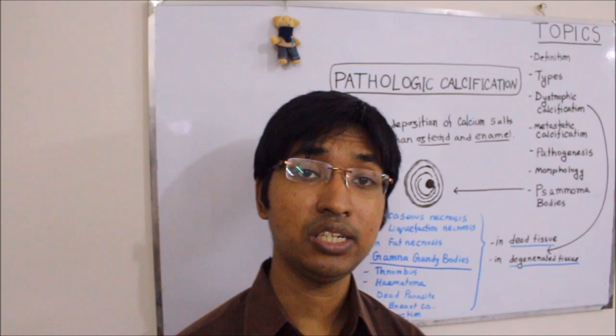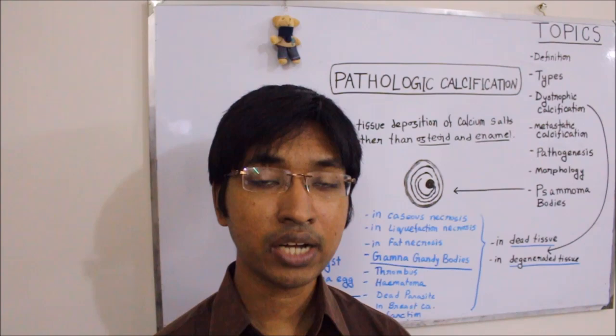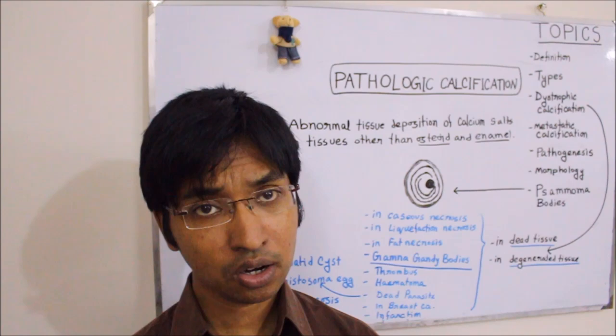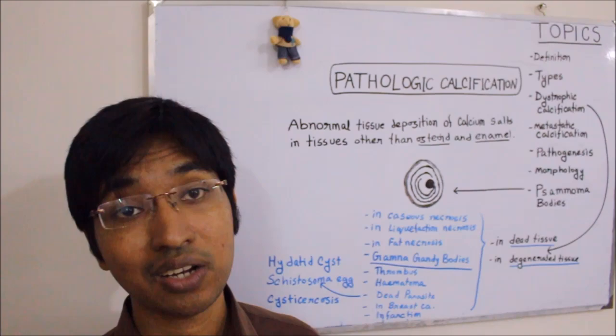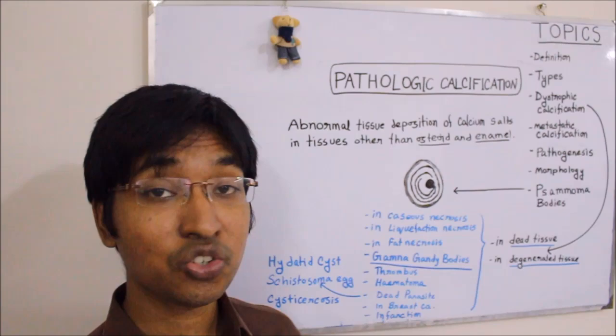The third example you will see in your textbook is in fat necrosis. We know that fat necrosis can occur either from trauma or from pancreatitis, and in fat necrosis sometimes there is deposition of calcium salt, resulting in dystrophic calcification. The fourth example is a bit tricky.